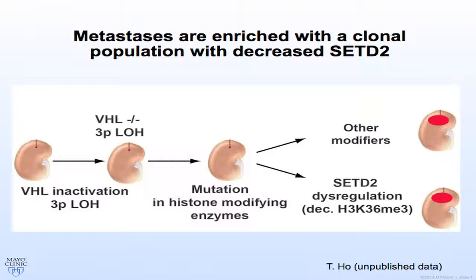Building on the model: VHL inactivation and 3p loss of heterozygosity occur as early events, followed by mutations in histone-modifying enzymes. Tumors with SETD2 dysregulation have decreased histone 3-lysine 36 trimethylation, and this population appears enriched in metastases, suggesting this phenotype could be potentially targeted.